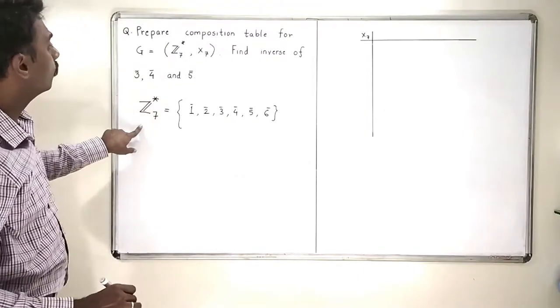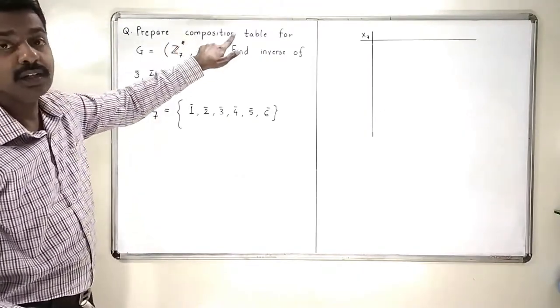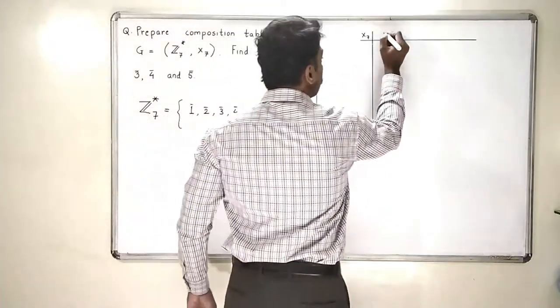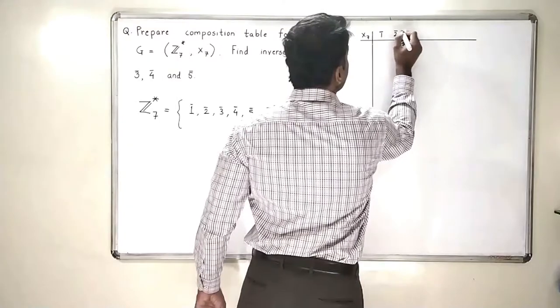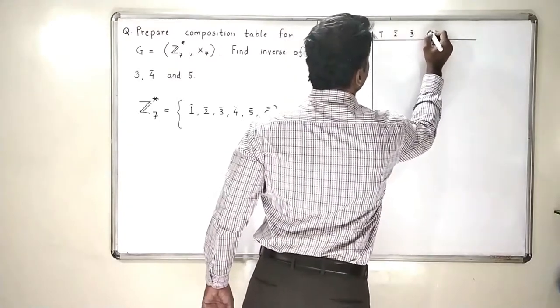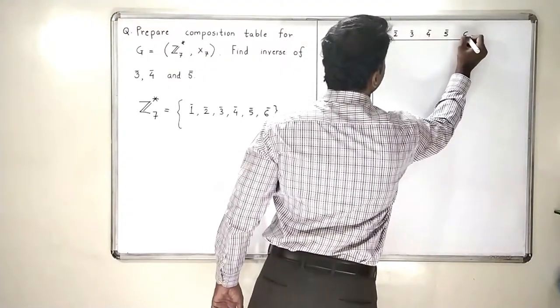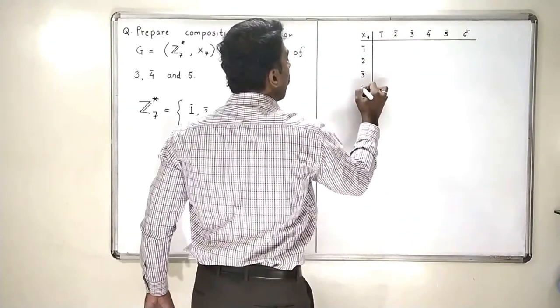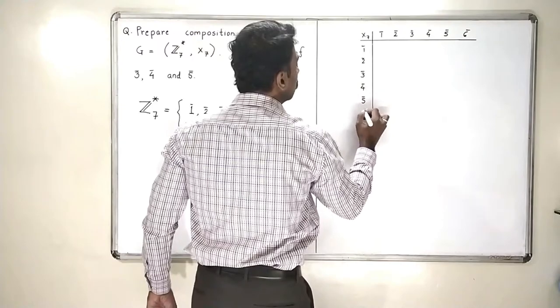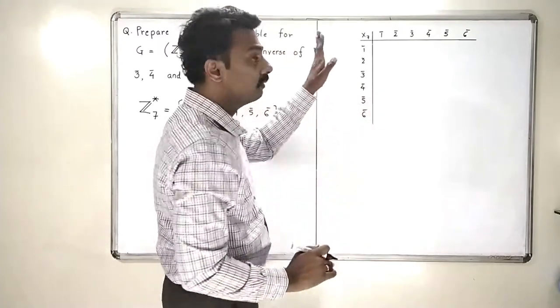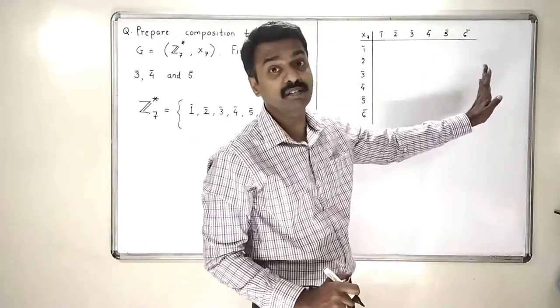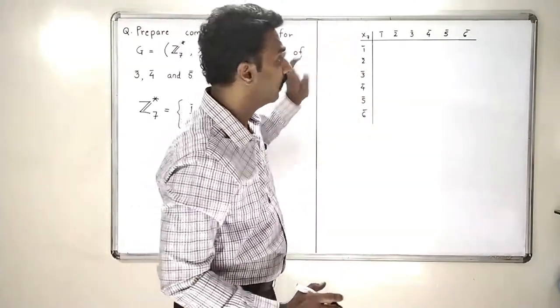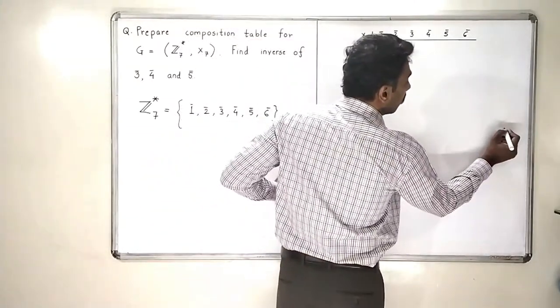And I am supposed to prepare a composition table for that. So, I will write the elements here. I will get 1 bar, 2 bar, 3 bar, 4 bar, 5 bar, 6 bar. Here also. And we will multiply the elements as our usual way, as discussed in the previous sections.